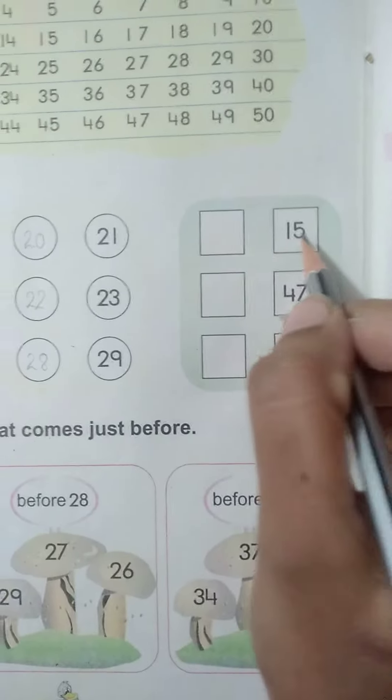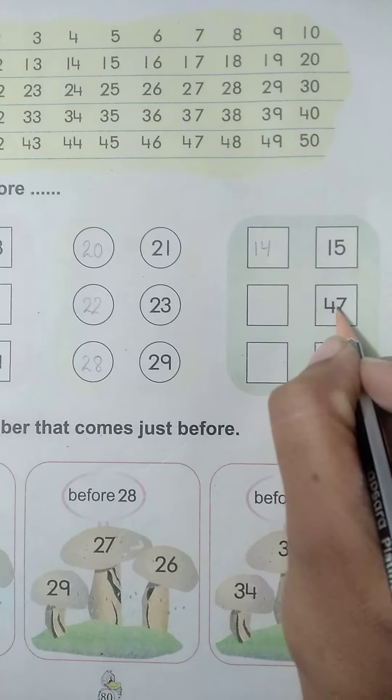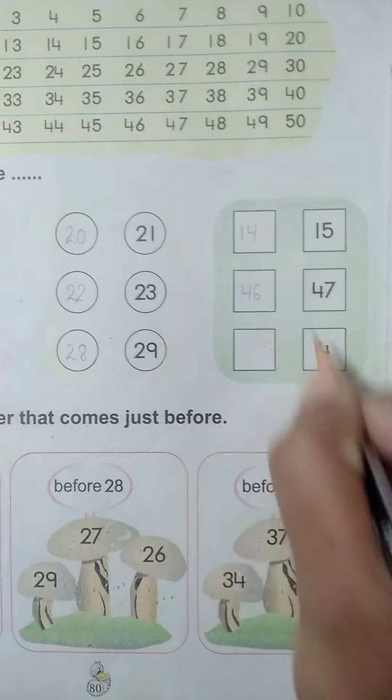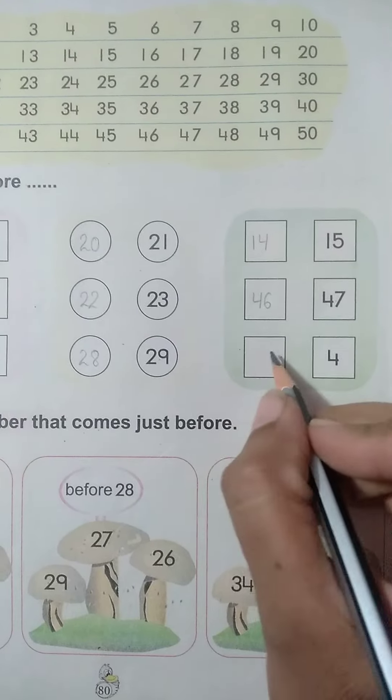What comes before 15? 14. What comes before 47? 46. What comes before 4? Number 3.